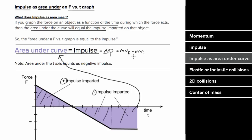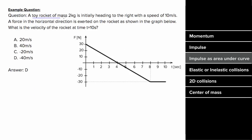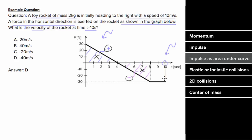Let's say a toy rocket of mass 2 kilograms was initially heading to the right with a speed of 10 meters per second, and a force in the horizontal direction is exerted on the rocket as shown in the graph. We want to know the velocity at t equals 10 seconds. The positive and negative triangles cancel completely, so the only area to worry about is between 8 and 10 seconds — a rectangle with height negative 30 and width 2 seconds, giving an impulse of negative 60 Newton seconds.